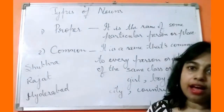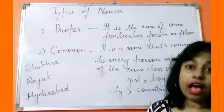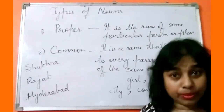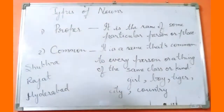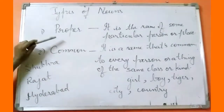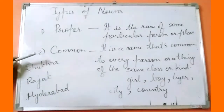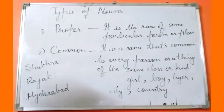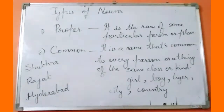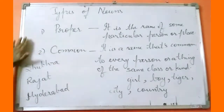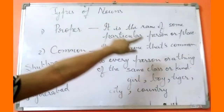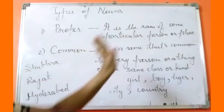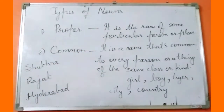Now that we know what nouns are, let us see how many types of nouns there are. The first one is a proper noun, and the second is the common noun. Remember I had told you that some words I had written in capital letters while some in small letters? The answer lies here. A proper noun is the name of some particular person or place, and therefore it will be written in capital letters.